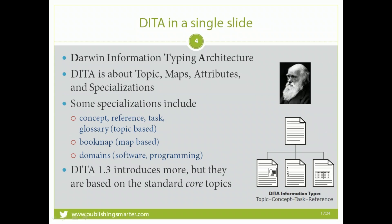In summary, DITA stands for Darwin Information Typing Architecture. It is about topic-based content — organizing those topics into maps, using attributes behind the scenes, and potentially specializing topics into things like concept, reference, task, or glossary. There's also a book map, which is based on the map, and different domains.